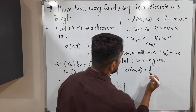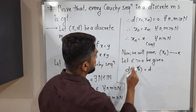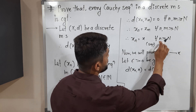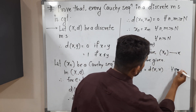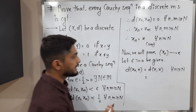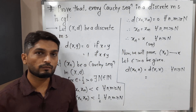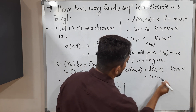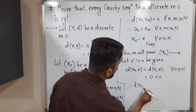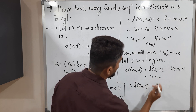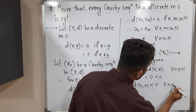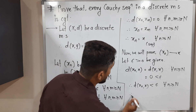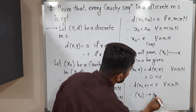Let us find the distance. As we can see, x_n is equal to x for all n greater than or equal to capital N, and the second term is also x. So what is the distance between x and x? Both terms are the same, so the distance is 0. And 0 is less than epsilon. Therefore, D(x_n, x) is less than epsilon for all n greater than or equal to capital N. This is the definition of a convergent sequence, so therefore x_n converges to x.